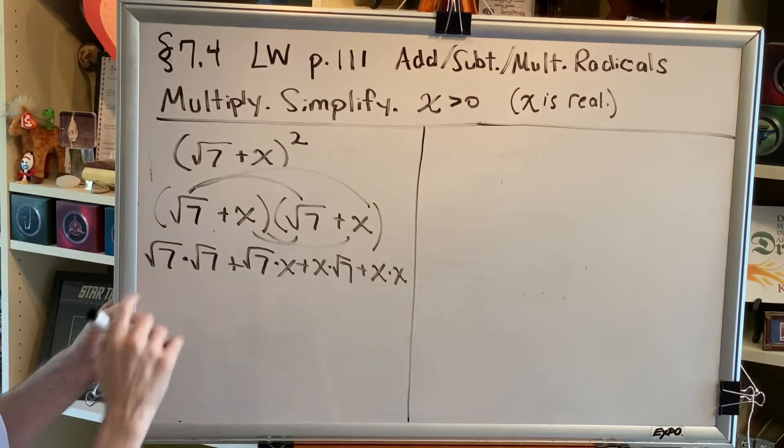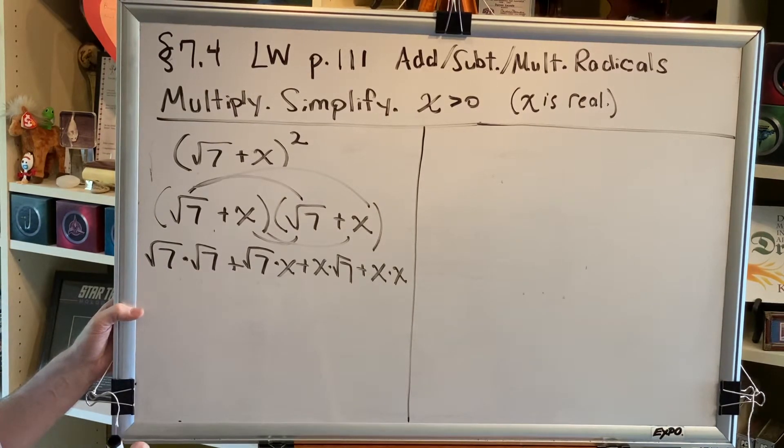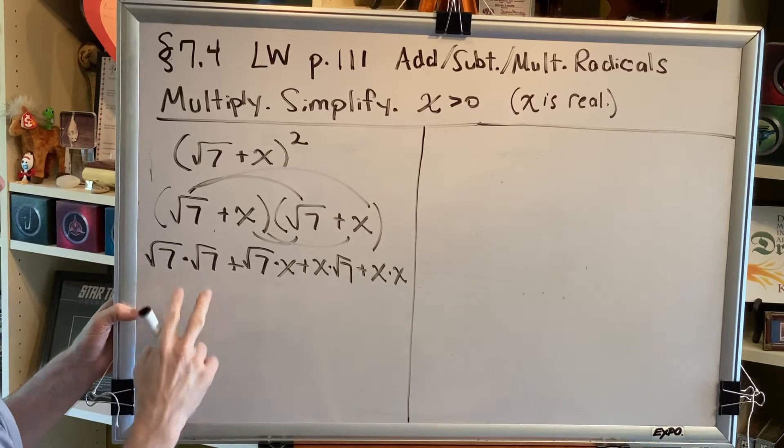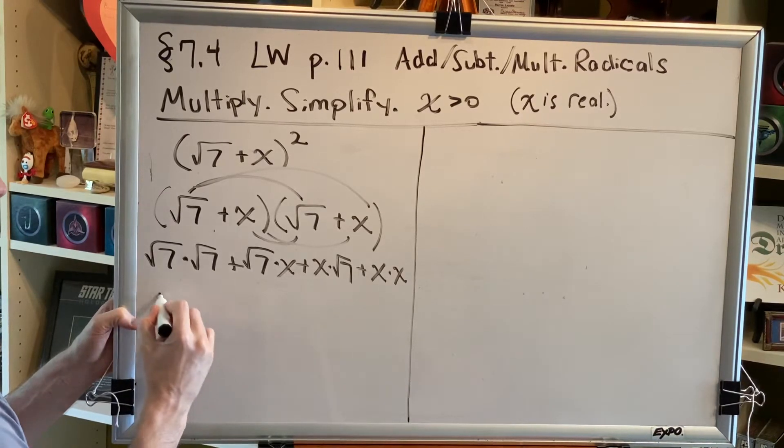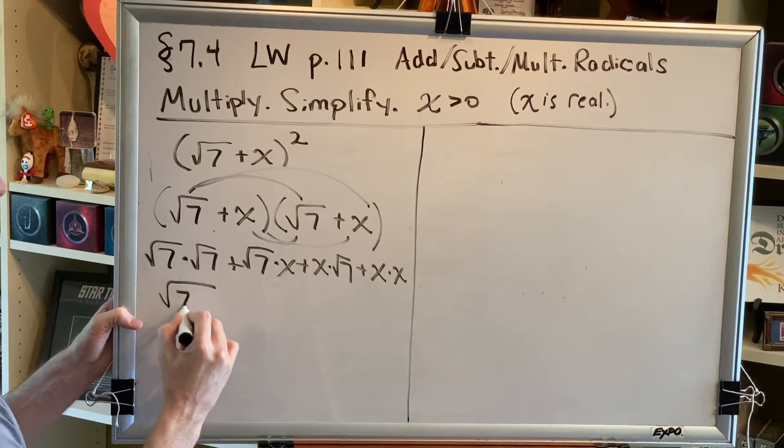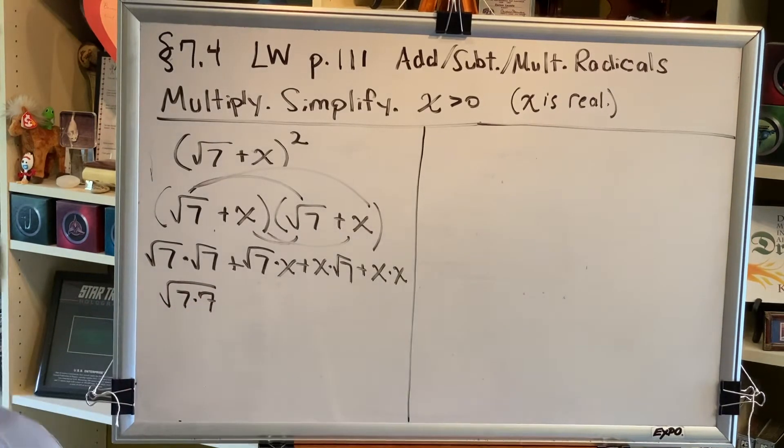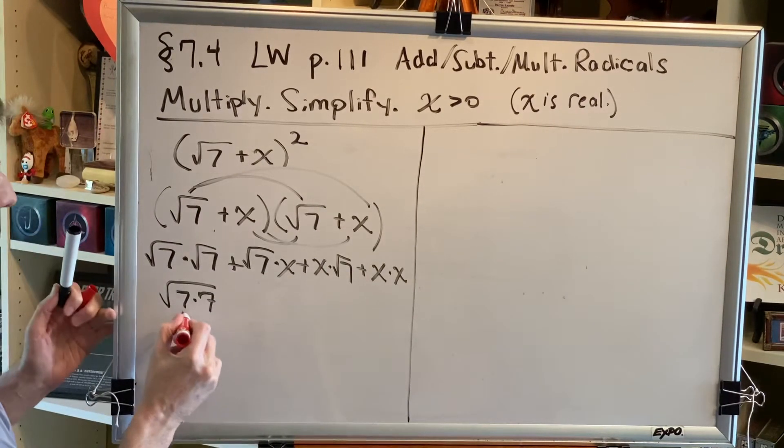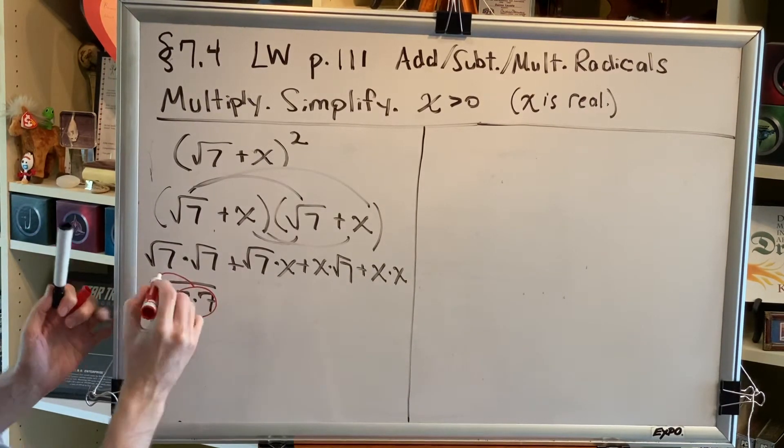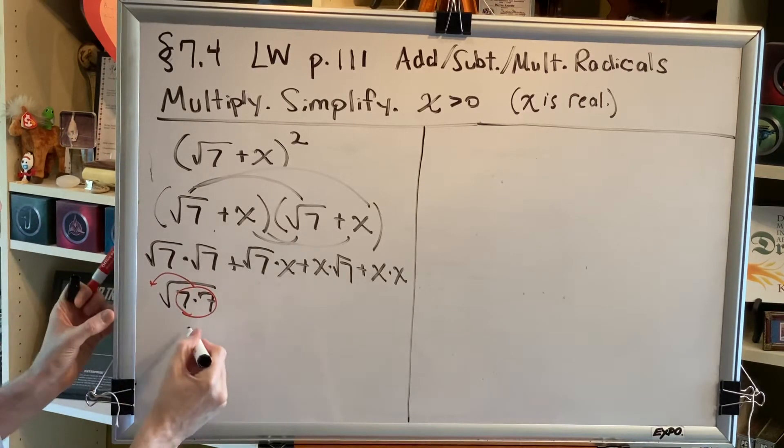The square root of 7 times the square root of 7 is just 7. If you don't remember that shortcut trick, one way you can think about this is, this is the same thing as the square root of 7 times 7. And simplifying radicals asks us to look for pairs of numbers.